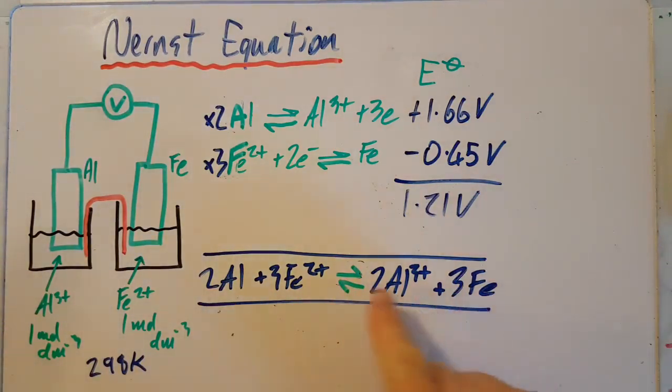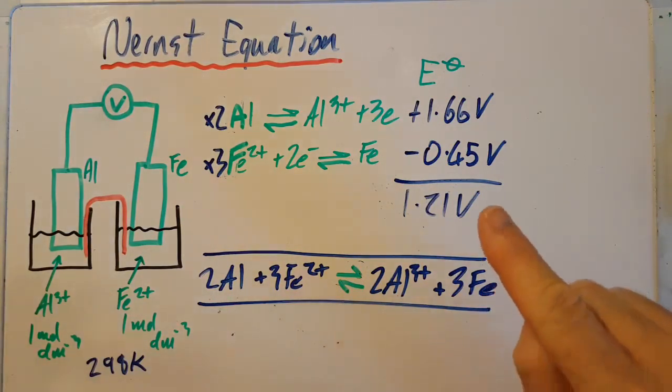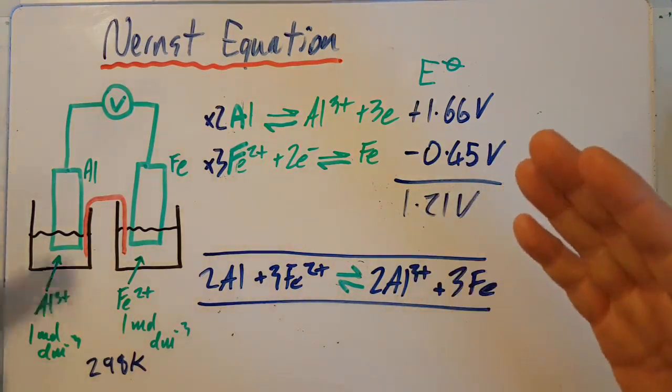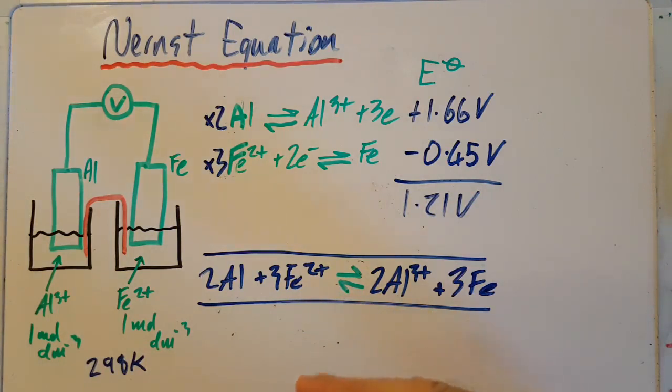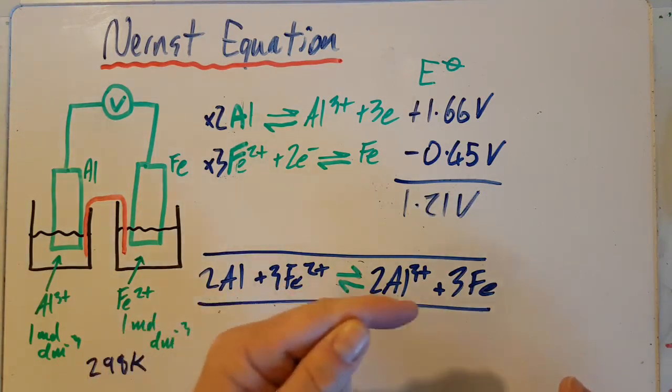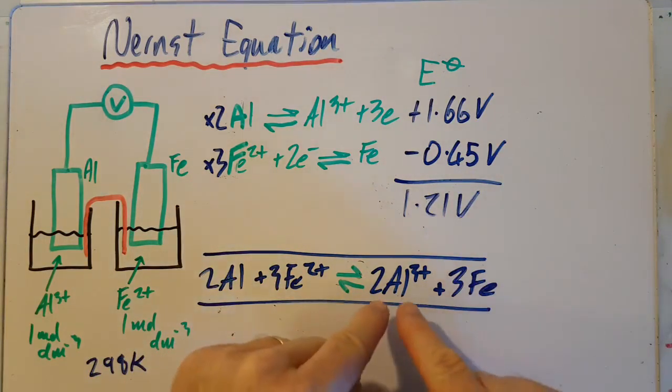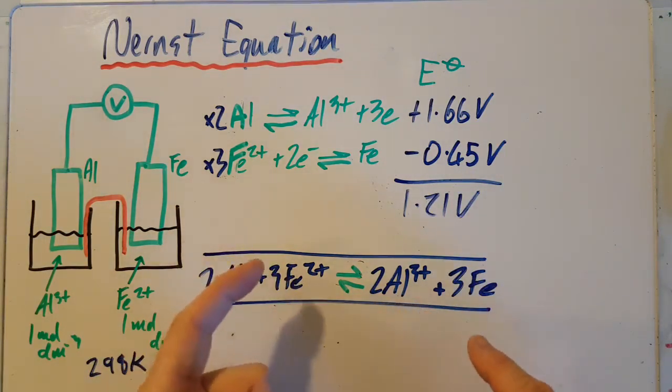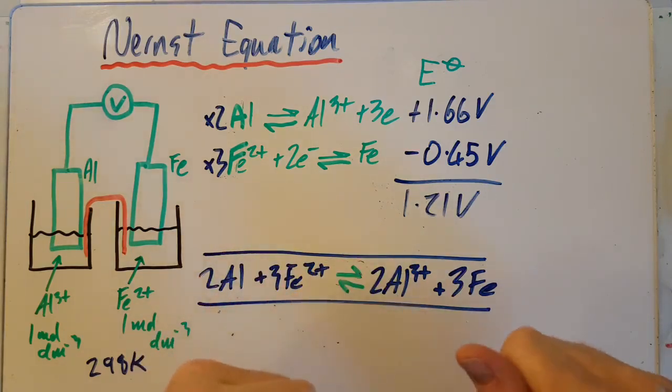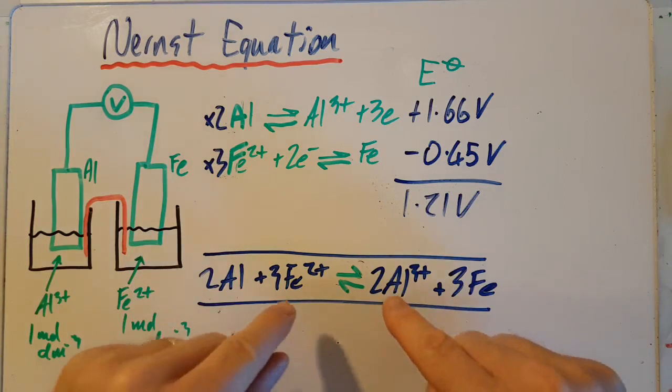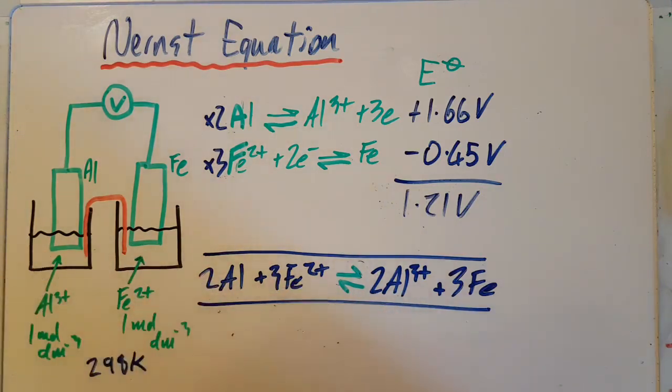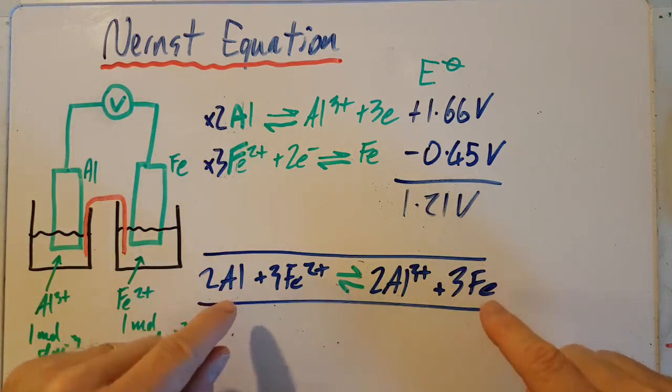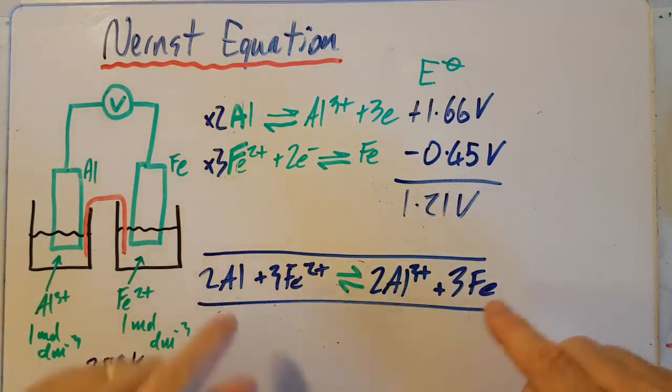All right, so how could I increase the voltage of this cell? Well, you could toy with messing around with the temperature or you could toy with messing around with the concentrations. According to Le Chatelier's theory, if you stress an equilibrium, the equilibrium will move to oppose the stress. If I increase the amount of iron 2+ ions, I'm going to push the equilibrium more that way and that's going to increase the voltage. And if I reduce the concentration of aluminum 3+ ions, the equilibrium will also shift to the right and that will increase the voltage.